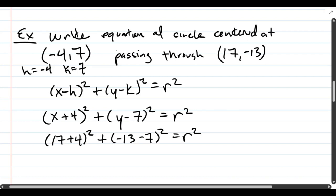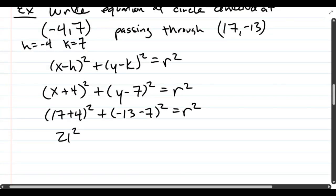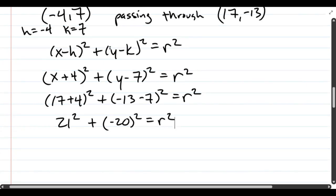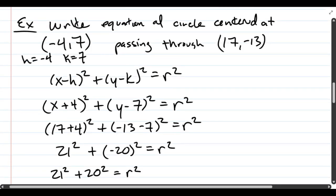All right. We can add these now. 17 and 4 is 21. Plus negative 13 minus 7 is negative 20. All right. From here, there's not much you can do. You could square these numbers. Again, I'm writing it as positive 20 because we're going to square it so that negative is going to disappear.